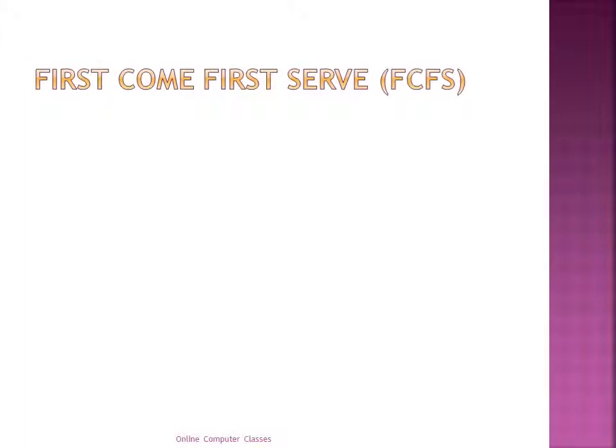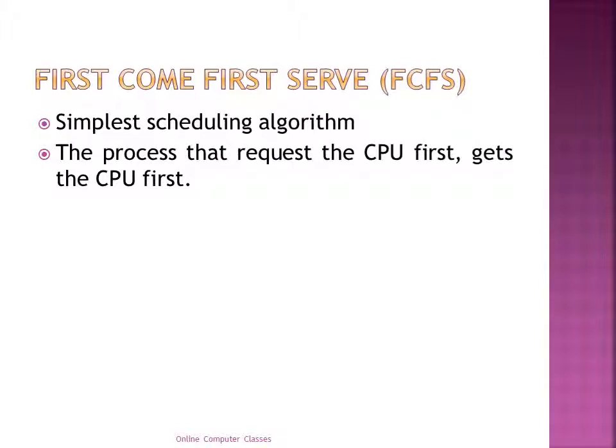FCFS — First Come First Serve — is the simplest of all scheduling algorithms. The key concept is to allocate the CPU in the order in which processes arrive. The process that requests the CPU first is allocated the CPU first. FCFS is implemented using a FIFO queue. When a process enters the ready queue, its PCB is linked onto the tail of the queue. When the CPU is free, it is allocated to the process at the head of the queue, which is then removed.